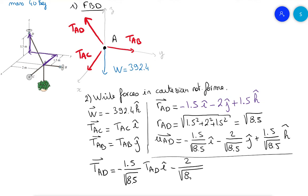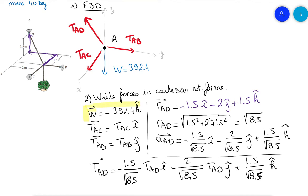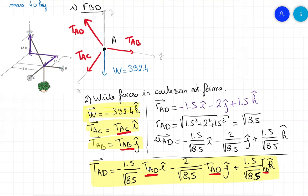So TAD equals: minus 1.5 divided by the square root of 8.5 times TAD on i-hat, minus 2 divided by the square root of 8.5 times TAD on j-hat, and plus 1.5 divided by the square root of 8.5 times TAD on k-hat. Now we have all the vectors: W, TAC, TAB, and TAD. We have three unknowns — the magnitudes of TAC, TAB, and TAD — and we have three equilibrium equations, so that's perfect.